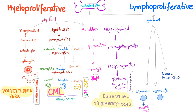Here is the famous golden slide of hematopoiesis. Myeloid stem cells and lymphoid stem cells — myeloid gives you everything except lymphocytes, lymphoid gives you only lymphocytes and natural killer cells. Myeloproliferative disorder is on the myeloid side, lymphoproliferative disorder is on the lymphoid side. For example, polycythemia vera gives you lots of red blood cells, CML gives you lots of neutrophils and some basophils, and essential thrombocytosis gives you lots of platelets.